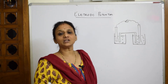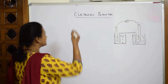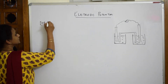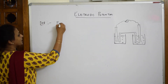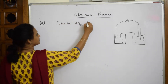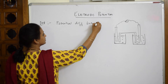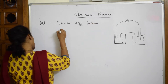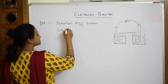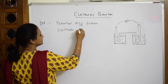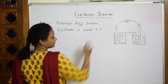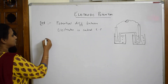The potential difference between the electrodes — because they are different, each in their own solution — is called electrode potential. The electrode potential can be of two types.